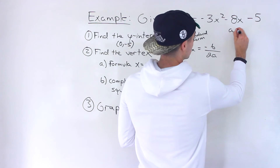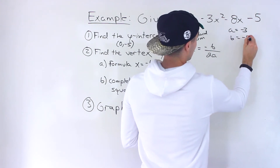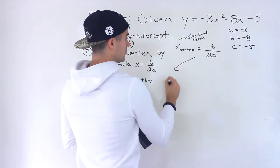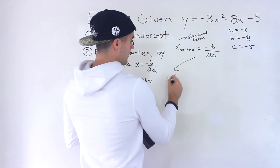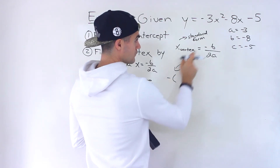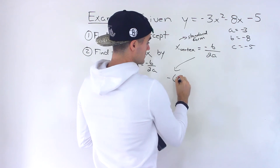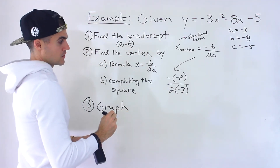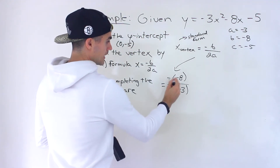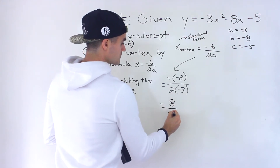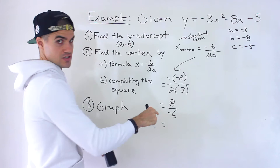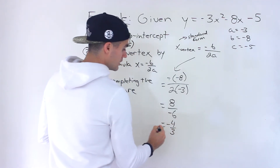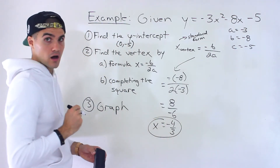The a-value is negative 3, the b-value is negative 8, and the c-value is negative 5. Plugging into the formula, we have negative b — the b is negative 8, in brackets — all over 2 times a, which is negative 3. Negative times negative turns into a positive. 2 times negative 3 gives us negative 6. And 8 over 6 simplifies to 4 over 3, with a negative sign, so negative 4 over 3 is the x-value of the vertex.